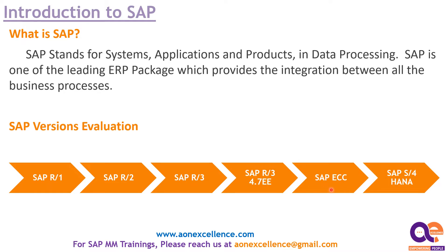The present latest version is SAP S/4 HANA. Up to SAP ECC, SAP used Oracle Database. From SAP S/4 HANA, they are using their own database — HANA is a database. They started providing a complete package from SAP S/4 HANA onwards. Also, note that SAP should be pronounced as individual letters S-A-P, not as a single word 'SAP'.